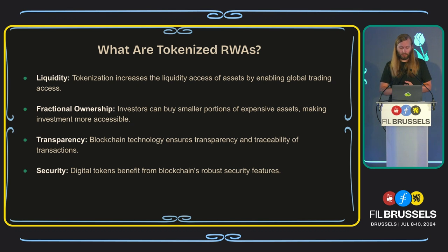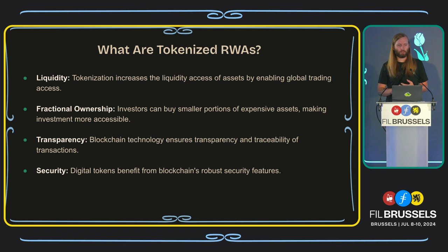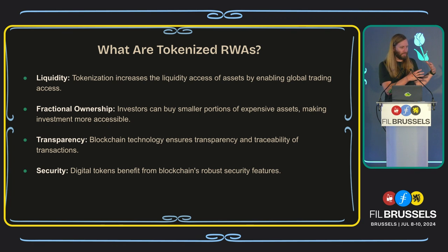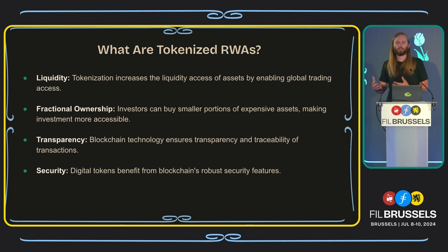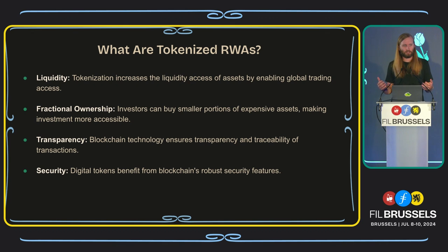Transparency. Blockchain technology ensures transparency and traceability of transactions, which helps bring trustlessness. For example, with carbon credits, the transparency allows you to see that a credit is not being minted twice — because double spending defeats the purpose of purchasing that carbon credit. Blockchain technology lends itself very well to having transparent transactions.